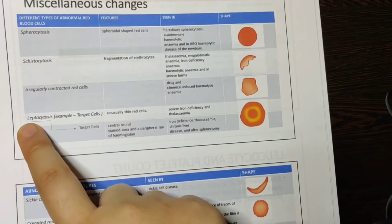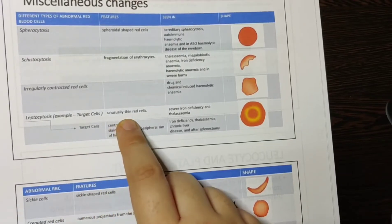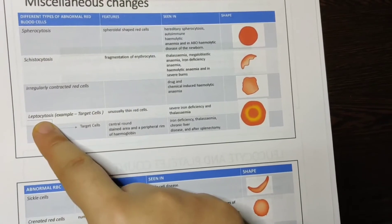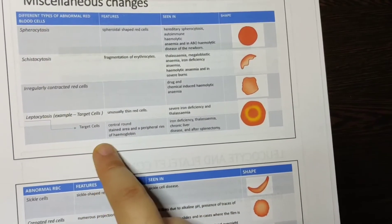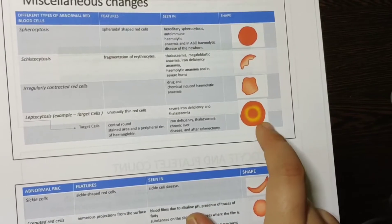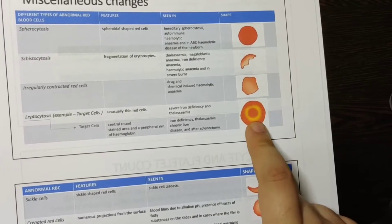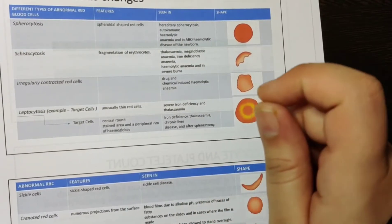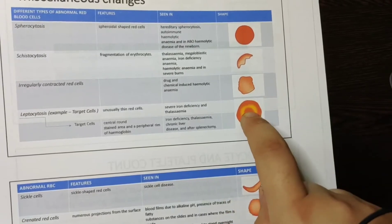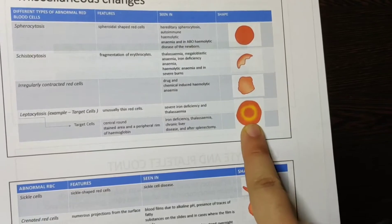Then we have leptocytosis. Leptocytosis are thin red cells — very thin red cells. One example of leptocytosis is target cells. These are a central round body stained area with a peripheral rim of hemoglobin. You know what targets look like — when you throw arrows, the target has a center with high points and an outer ring with less points. So this is a target-shaped cell.